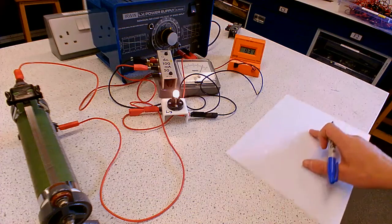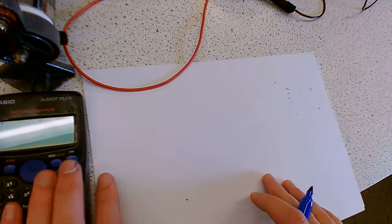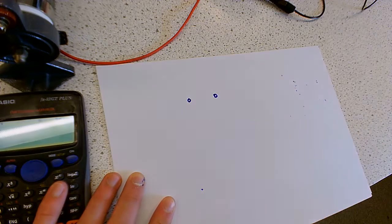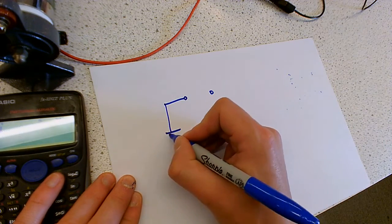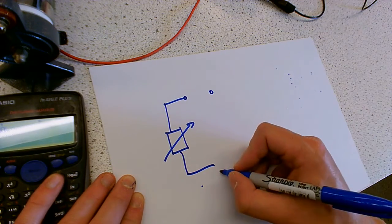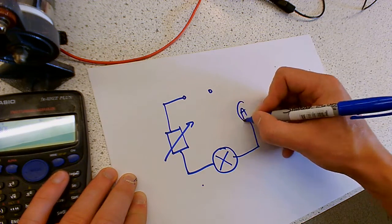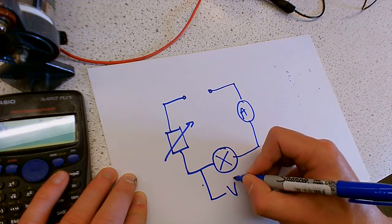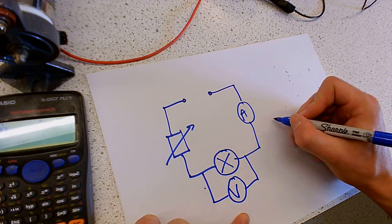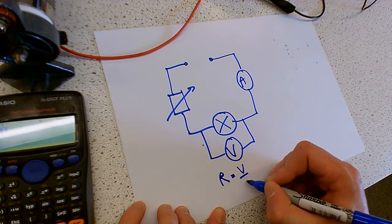Let's quickly sketch our circuit diagram so we can see what we're working with. We've got a power pack, going to a variable resistor, which allows us to change the current and potential difference across our light bulb — there is our filament bulb. That is then in series with an ammeter, and we've got our voltmeter across it.